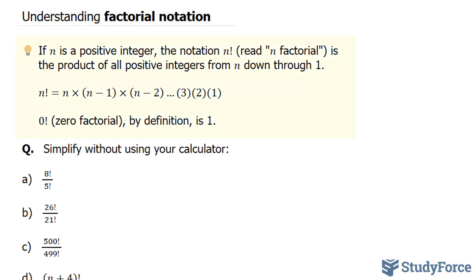If n is a positive integer, and an integer is a whole number that's either negative or positive, the notation n factorial is the product of all positive integers from n down through 1. Algebraically, that's represented as n times (n-1) times (n-2) all the way to 1.